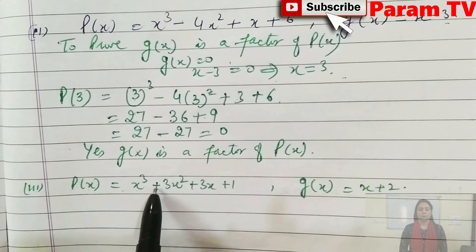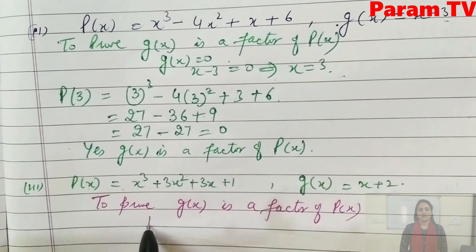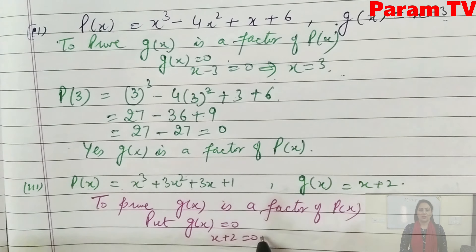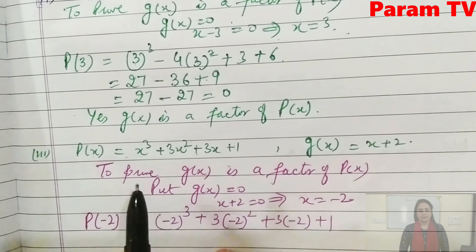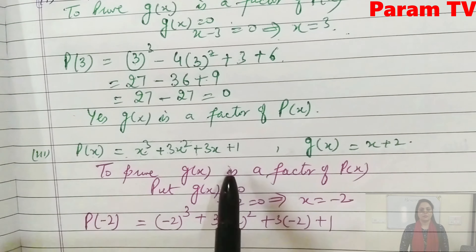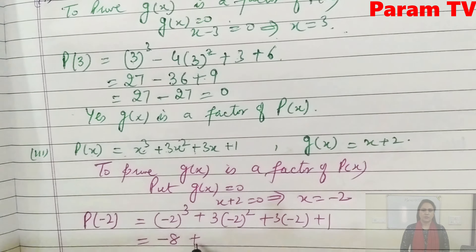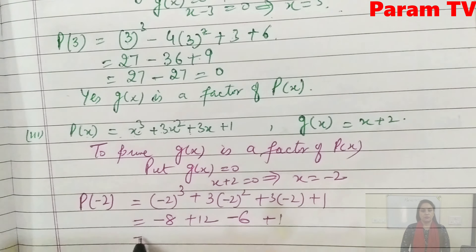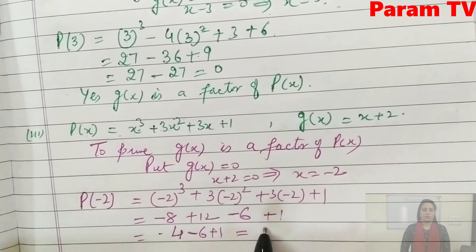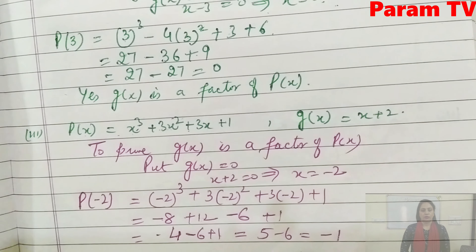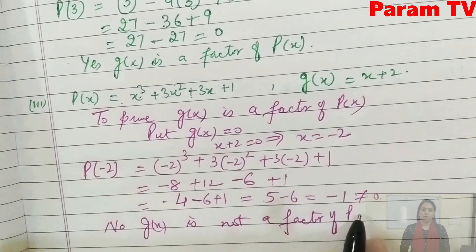Another part: p(x) = x³ + 3x² + 3x + 1 and g(x) = x + 2. Put g(x)=0: x+2=0, so x = -2. p(-2) = (-2)³ + 3(-2)² + 3(-2) + 1 = -8 + 12 - 6 + 1 = -1, which is not equal to 0. So g(x) is NOT a factor of p(x). Let's move to the next question.